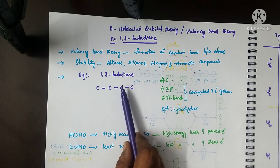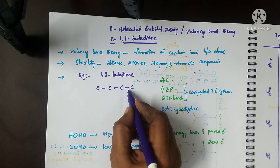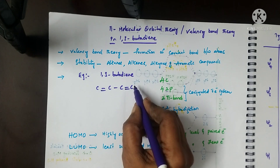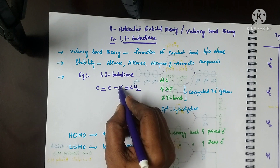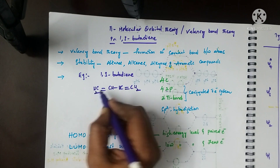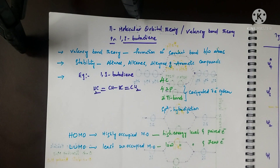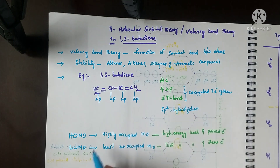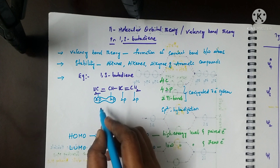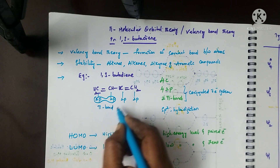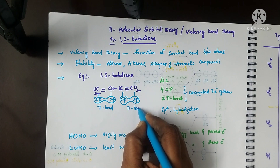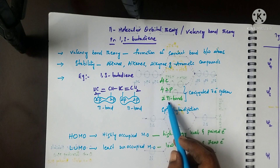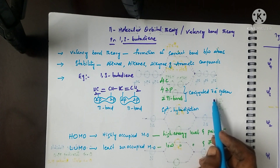Let us go to the example: 1,3-butadiene. 'But' means having four carbons; 'ene' indicates the presence of a double bond. The double bond is present between the first and second carbon, and between the third and fourth carbon. So the valence of carbon gives us CH2, CH, CH, CH2 — four carbons total. Each carbon has one 2p orbital. These neighboring 2p orbitals are involved in pi bond formation. 1,3-butadiene has 4 carbons and 4 2p orbitals involved in two pi bond formations — this is called a conjugated pi electron system.